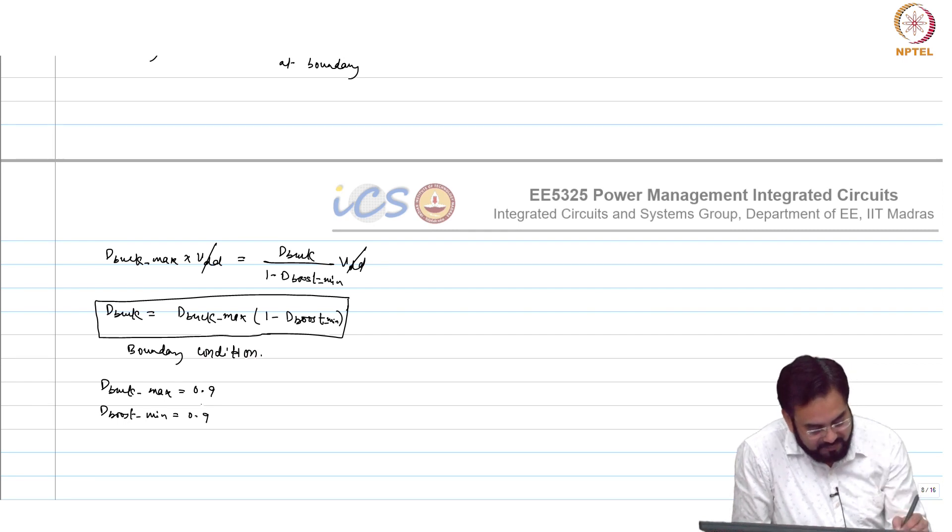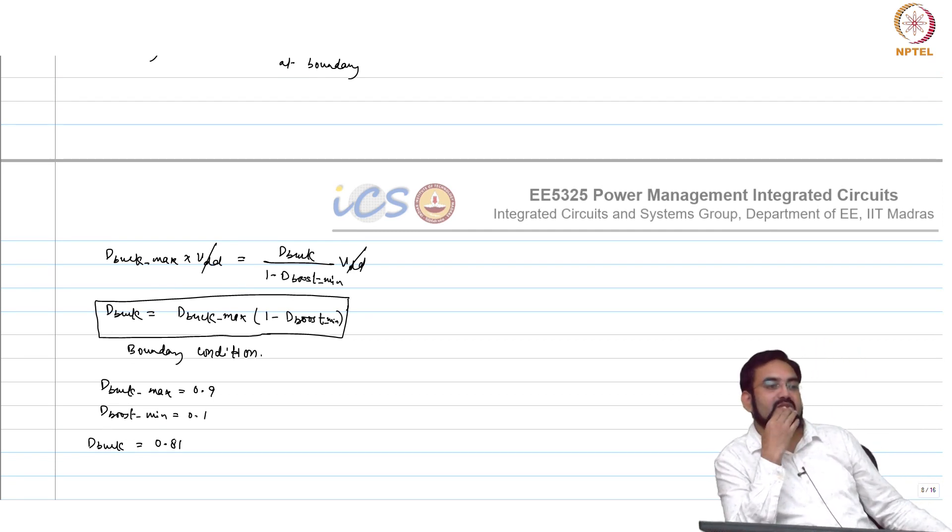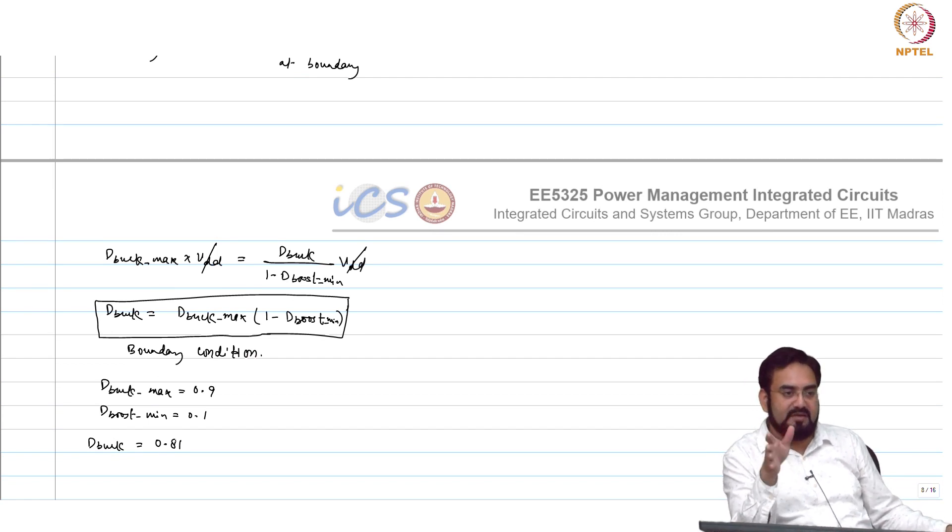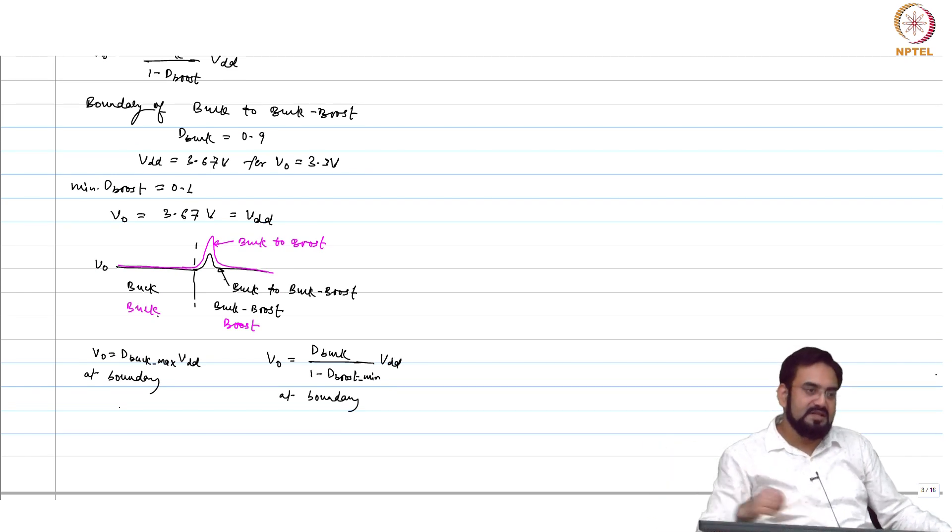We know that debug_max is 0.9 d_boost_min equal to 0.1. What is debug? Now if you operate in the buck boost you make your debug 0.81 and your d_boost is 0.1 you can achieve the same voltage which is equal to 0.9 of debug. You want see any overshoot in the output, it will remain at the same constant voltage.